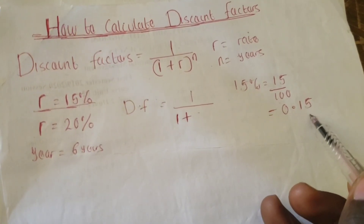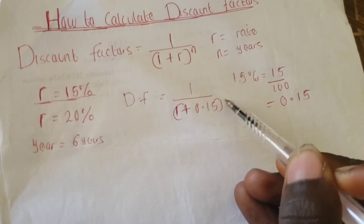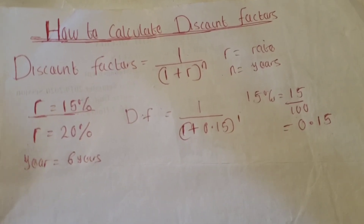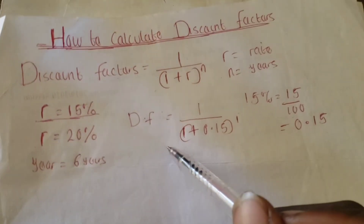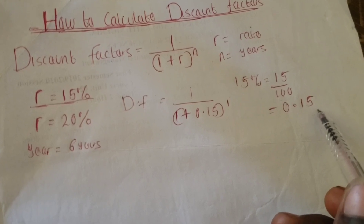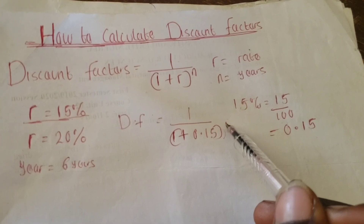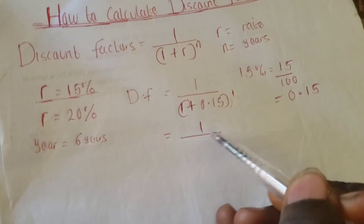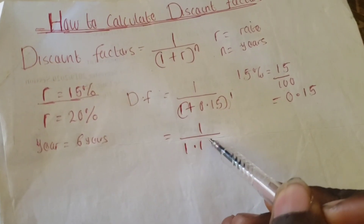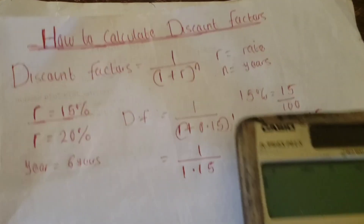So I'm going to substitute r as 0.15. I'm going to have 1 over (1 + 0.15) raised to the power of 1, because I want to calculate the discount factor for the first year at 15 percent. So the discount factor for the first year is 1 over 1.15 raised to the power of 1, which also gives 1.15.